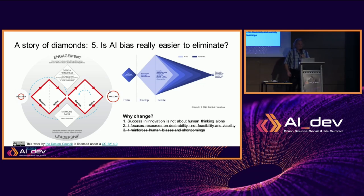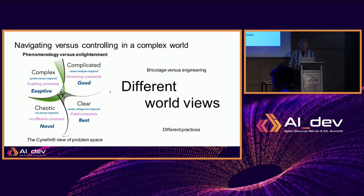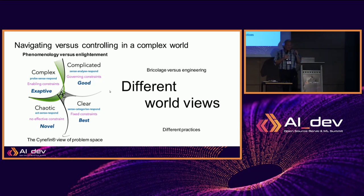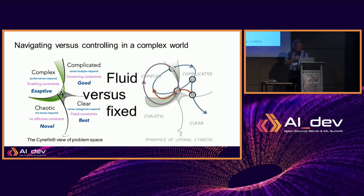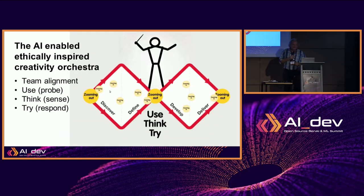What we are proposing is not to change the classic model — keep the double diamond, but ingest it with new aspects that make it work with artificial intelligence, and more specifically in an ethical way. What we are proposing is the creation of an AI-enabled, ethically inspired creativity orchestra.